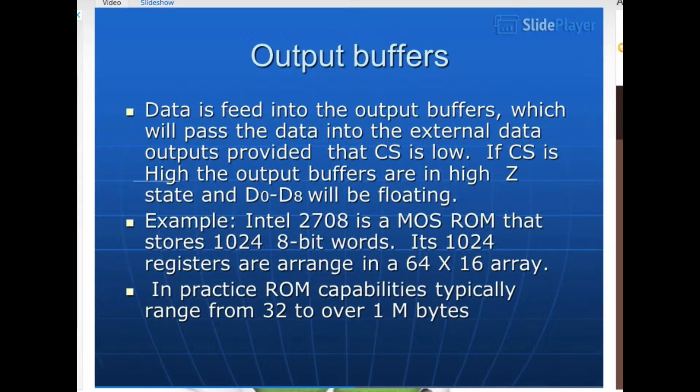Output buffers. Data is fed into the output buffers which will pass the data into the external data outputs provided that CS is low. If CS is high, the output buffers are in high Z state and D0 to D7 will be floating. Example: Intel 2708 is a MOS ROM that stores 1024 8-bit words. Its 1024 registers are arranged in a 32 by 32 array. In practice, ROM capabilities typically range from 32 to over 1 megabyte.